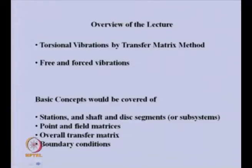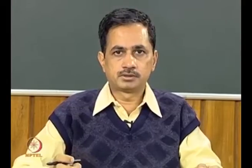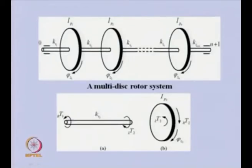Coming to the transfer matrix method, unlike previous methods such as Newton's method, D'Alembert's principle, Lagrange's equation, or Hamilton's principle, in this particular case we try to derive the equations for some segment of the rotor system — like a shaft segment, disc segment, or coupling segment. Once we have these equations for these segments, we can use them for any complex system.